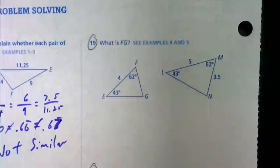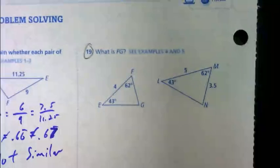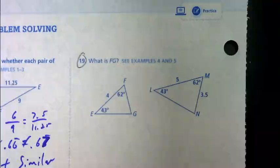On number 19, what is FG? So, on this one, first off, is there enough information to say that those two triangles are similar? Yes. Again, you have to make sure that there is enough information before you start a problem like this. Now, they might just say in the directions, all the following figures are similar.